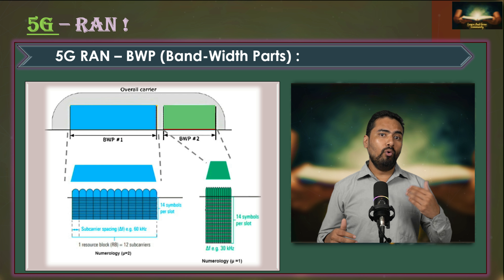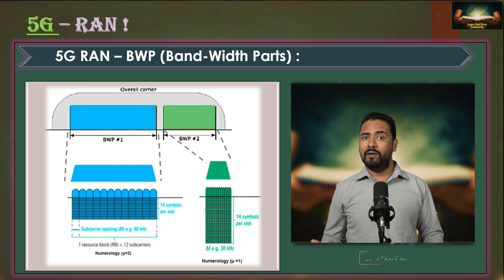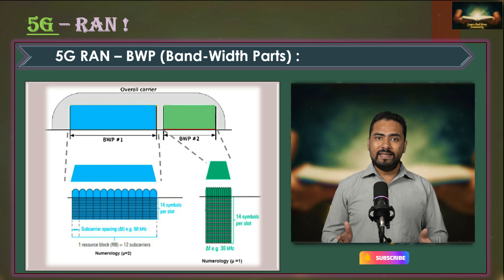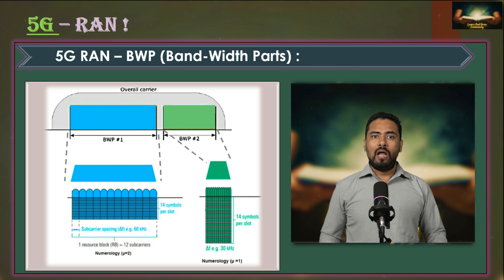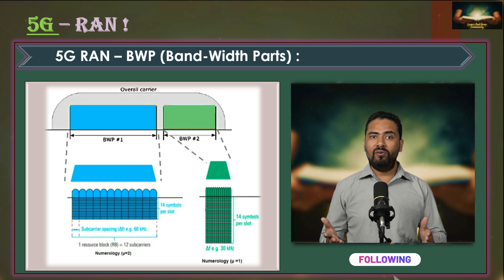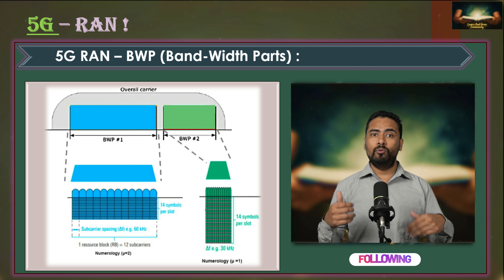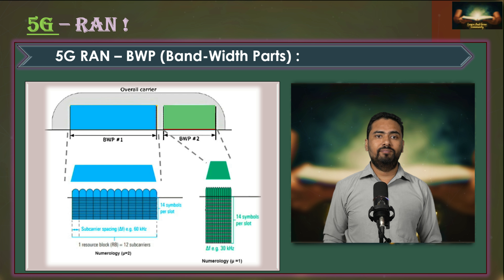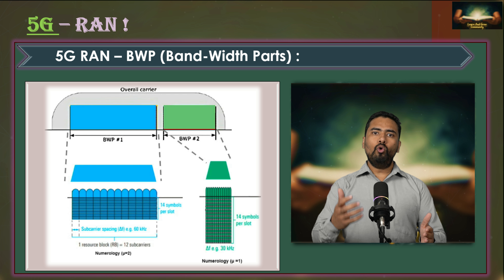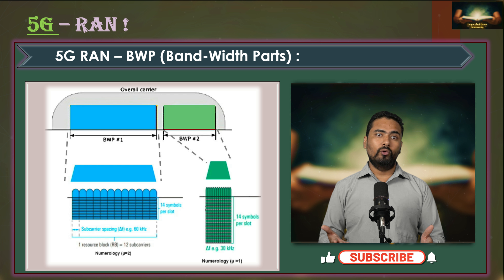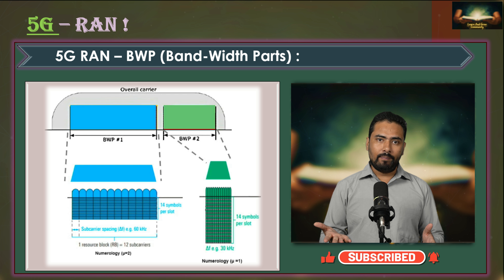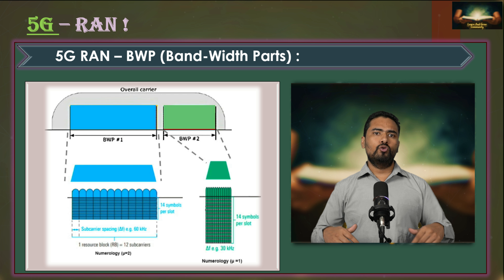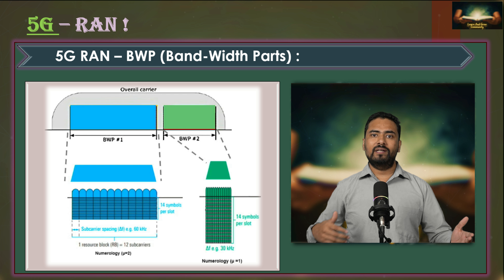There is one more spectrum-related concept in NR called bandwidth part. Most base stations can utilize the wider bandwidth available in 5G. However, user equipment capabilities can differ across handsets, making it more challenging for some UEs to use the larger available bandwidth. For example, some low-cost smartphones may struggle to utilize the full bandwidth, and even capable UEs may not need to use wide bandwidth continuously.